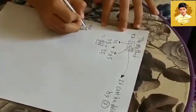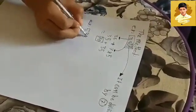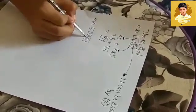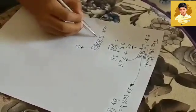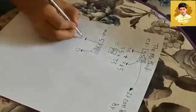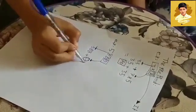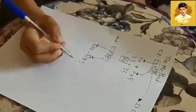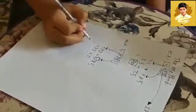Let us take another example such as 5,880. We will take the last digit, 0, and put it here. The other digits are 588. 0 multiplied by 5 equals 0. 0 plus 588 equals 588.